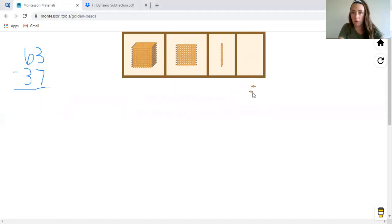So for 63, we're going to need three unit beads. One, two, three, and six 10 bars. So one, two, three, four, five, six. So that gives us 63.